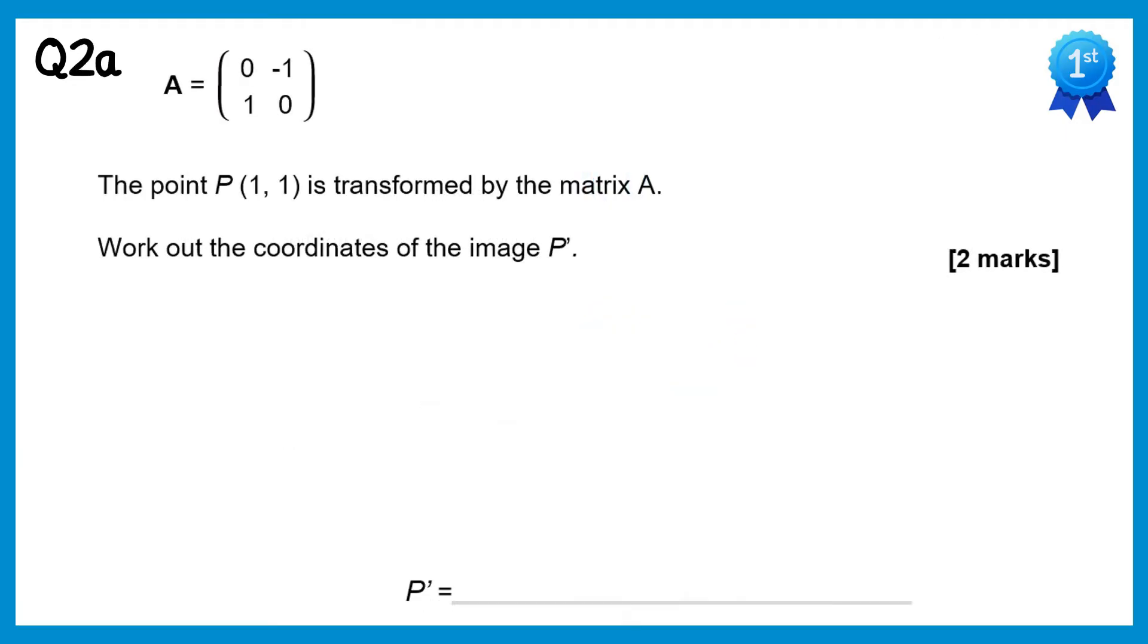For question 2 we have matrix A and we're transforming the point P. So we'll write matrix A, then point P which is (1,1), and then we'll transform it by multiplying. We do (0,-1) with (1,1), and if you multiply those you'll get negative 1, and then (1,0) with (1,1), and if you multiply those you'll get 1.